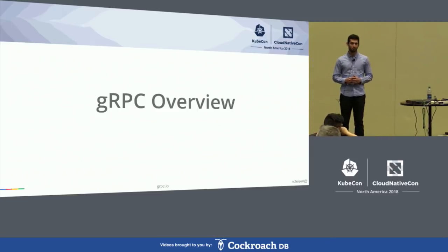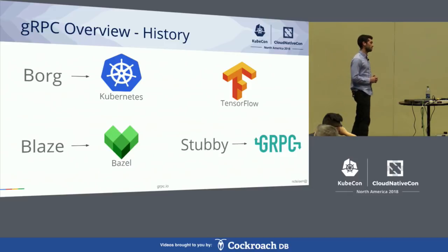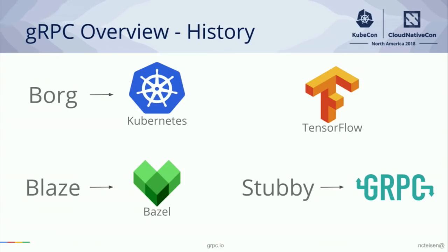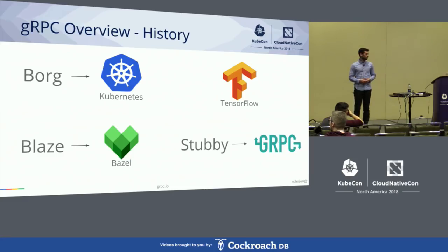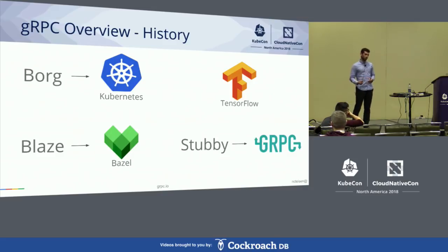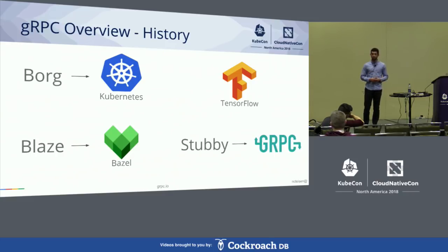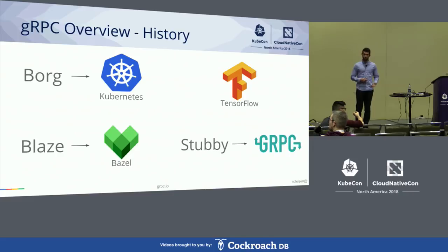Starting with the gRPC overview. Google has a rich history of taking awesome technology internally and making it available to open source. Internally there's a container management system called Borg, which was open-sourced as Kubernetes. Similarly, the internal build system called Blaze was open-sourced as Bazel. TensorFlow, the machine learning library, also exists internally and was made available to the open source community. The internal RPC solution was Stubby, but Google is replacing it with gRPC, which is built in the open source and is currently migrating internal use cases.